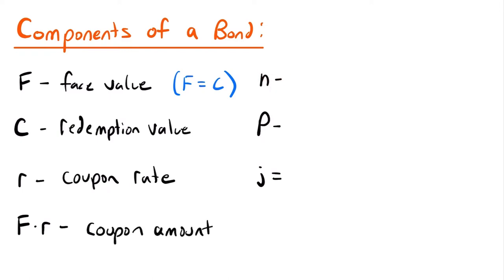Lowercase n represents the number of coupon periods — the number of times that a coupon is paid throughout the term of a bond. Importantly, for bonds, coupons are assumed to be paid semi-annually unless stated otherwise. That means the coupon rate will typically be given as a nominal rate convertible semi-annually. This is very important for the calculation of the price of a bond.